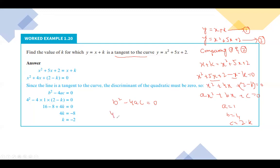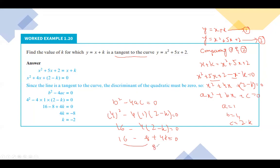Since the line is tangent to the curve, we apply the condition b squared minus 4ac equals zero. Substituting: 4 squared minus 4 times 1 times (2 minus k) equals zero, giving 16 minus 4(2 minus k) equals zero, so 16 minus 8 plus 4k equals zero, then 8 plus 4k equals zero, so 4k equals minus 8, and k equals minus 8 over 4, which equals minus 2. This is the required result.